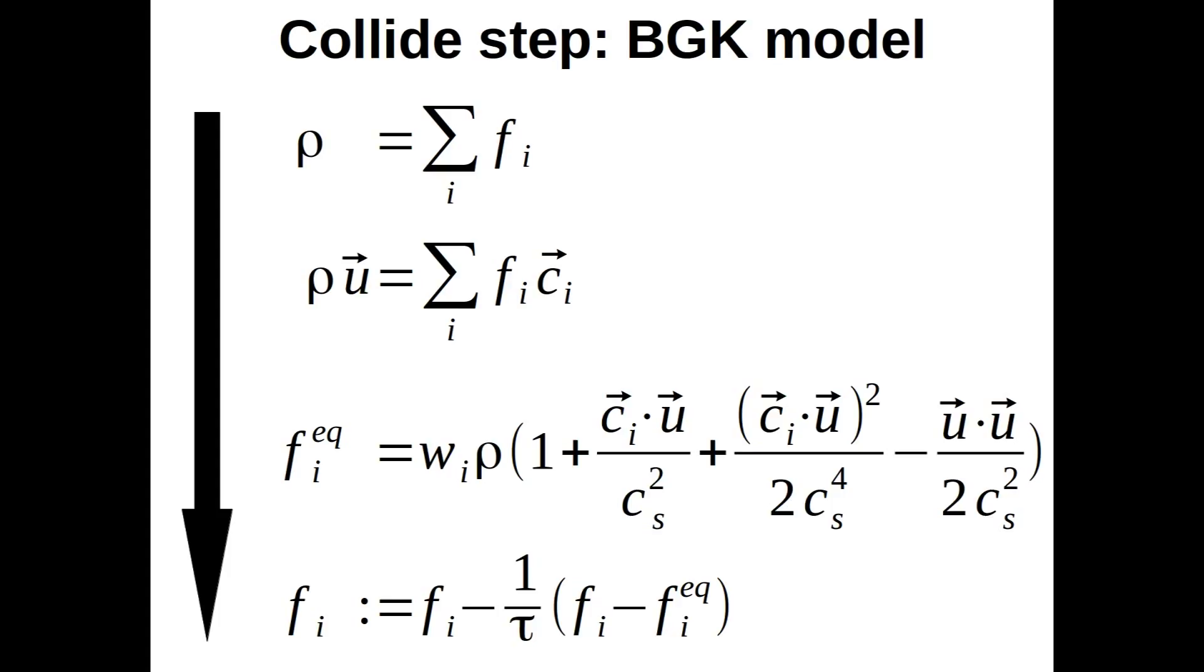First, we compute mass and momentum inside a single grid cell from the distributions that have just entered our cell. Then, we compute the equilibrium distribution Fi equilibrium.